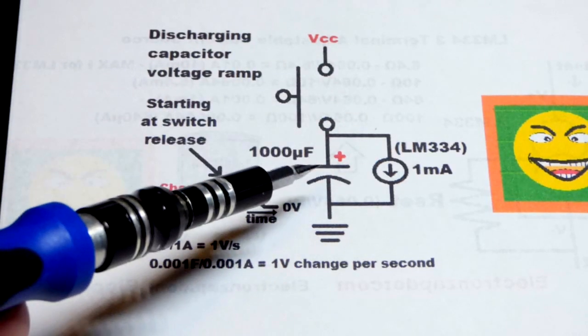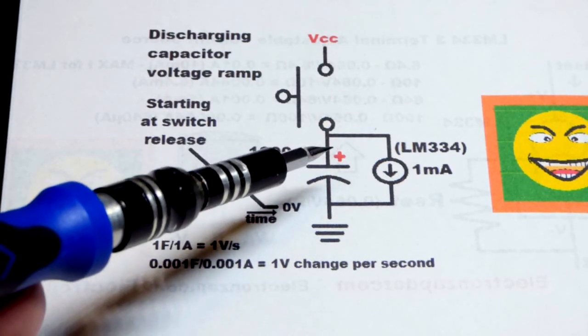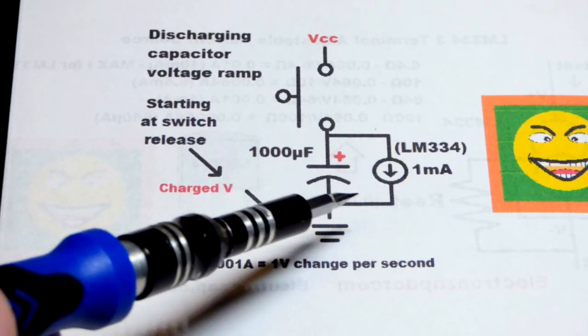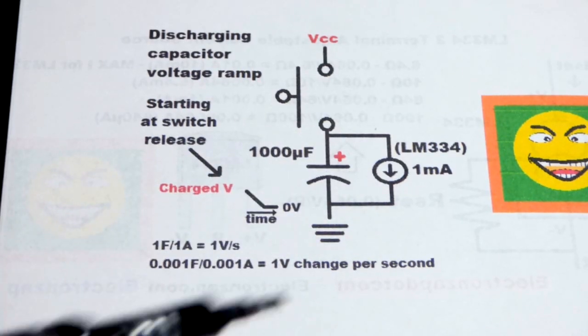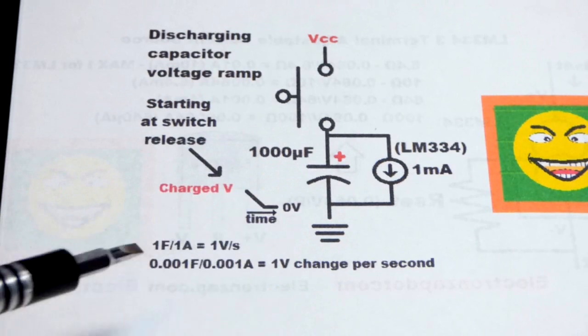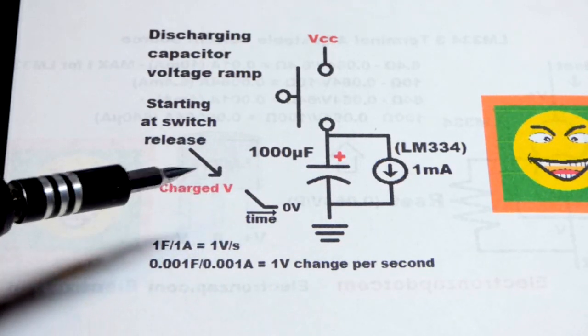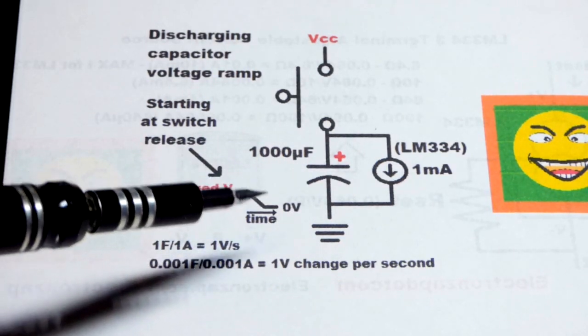When I release the switch, current will be provided by the capacitor. It'll discharge through the current source, and as it discharges its voltage will go down. That's how capacitors work, and we'll have a steady ramp right there.